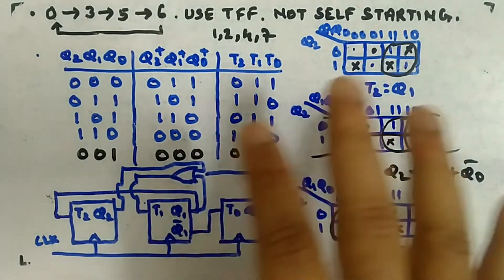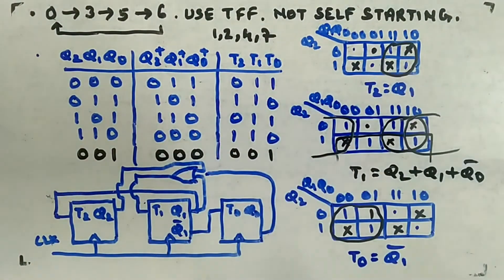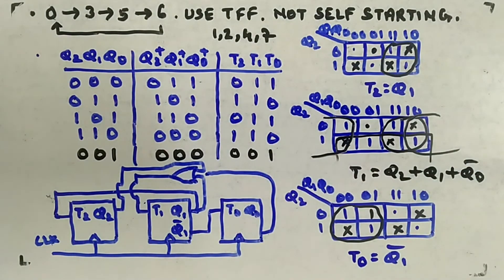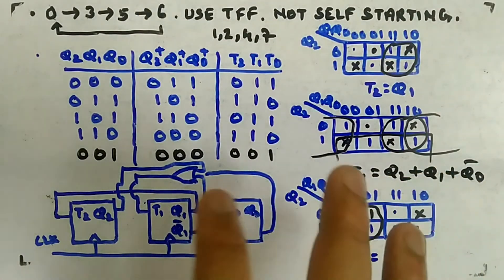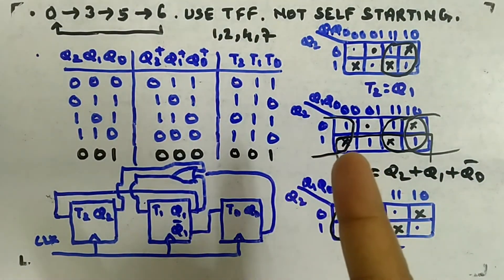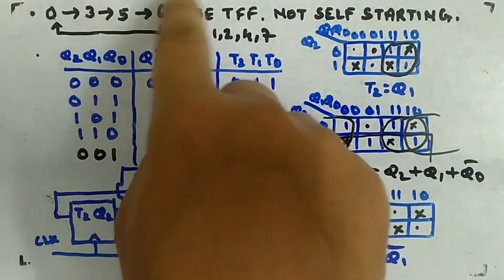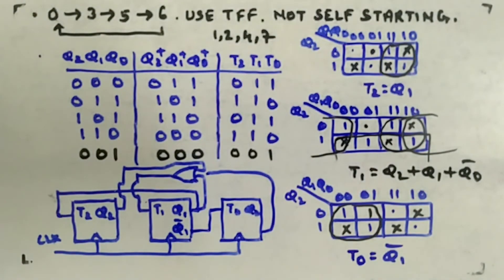There are different ways to make a counter self-starting — some use a clear input, but that only works if 000 is in the sequence. You can add next-state entries for all unused states, but that increases complexity further. The key lessons: the mod formula needs modification for synchronous counters, and always check self-starting after the initial design.